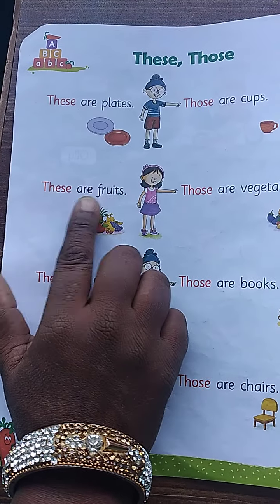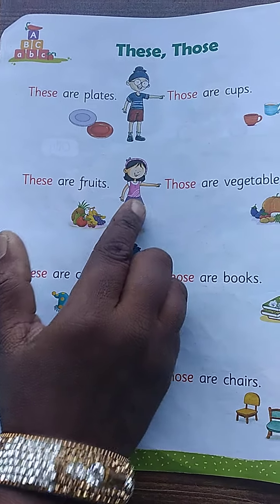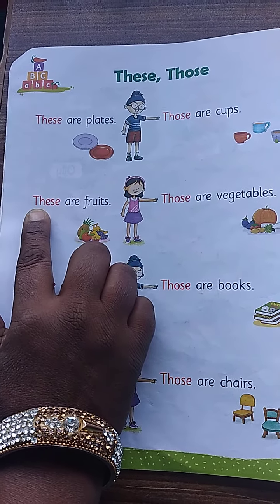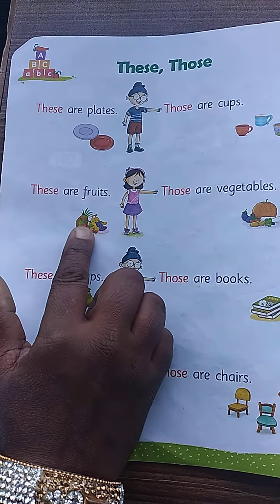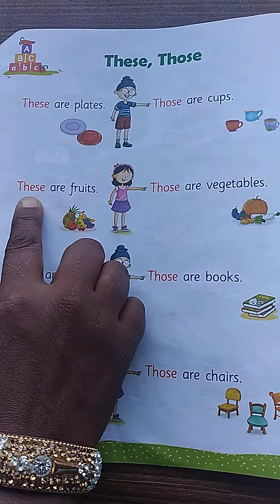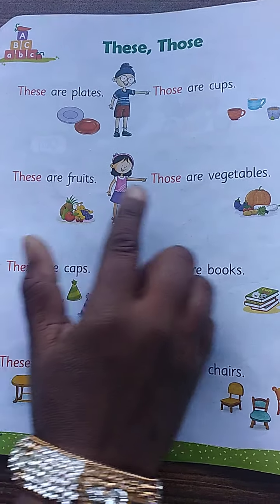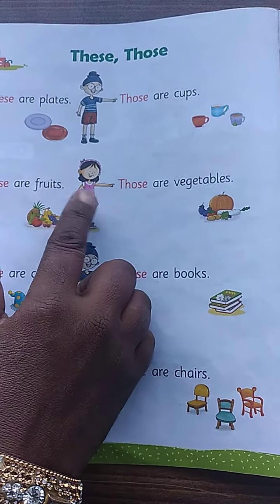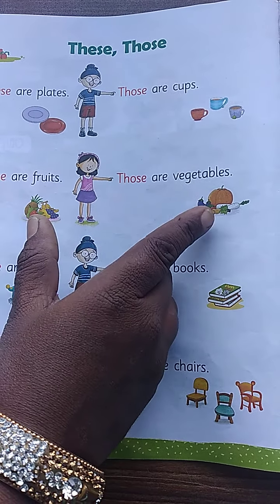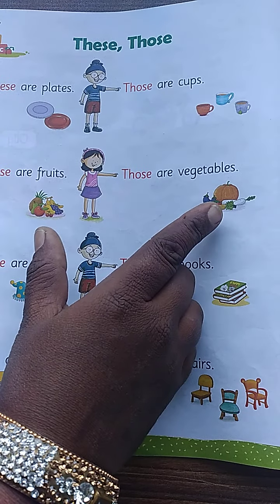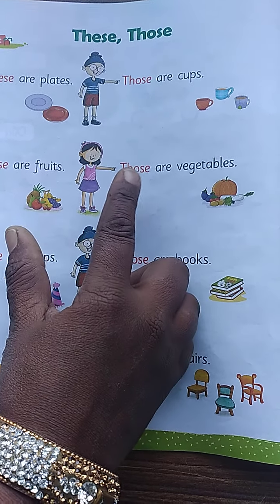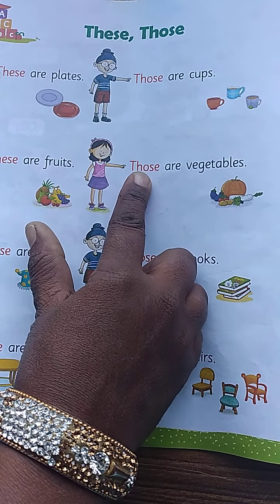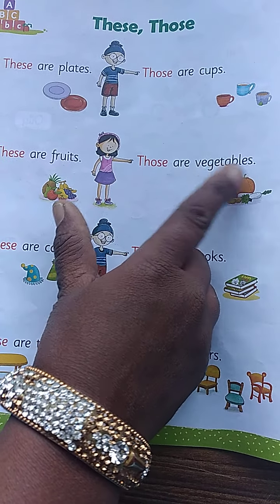These are fruits. Fruits are near the girl, so here we use these — more than one. These are fruits. Those are vegetables. The vegetables are far from the girl, so here we use those. Those are vegetables.